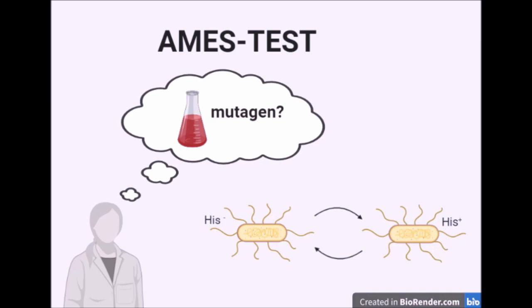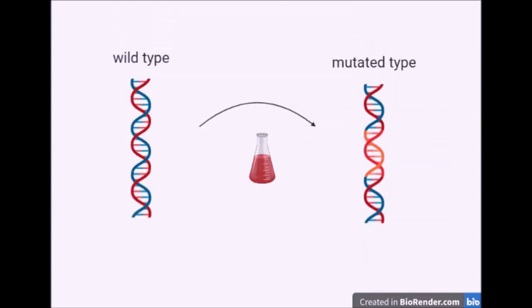Mutagenic chemical compounds cause a mutation, which is a stable random change in the genome. Due to this change, defective proteins may be synthesized, which in turn can have a significant influence on the organism by causing diseases like cancer. The process of a mutation can occur in both directions, therefore the terms mutation and reverse mutation are used.